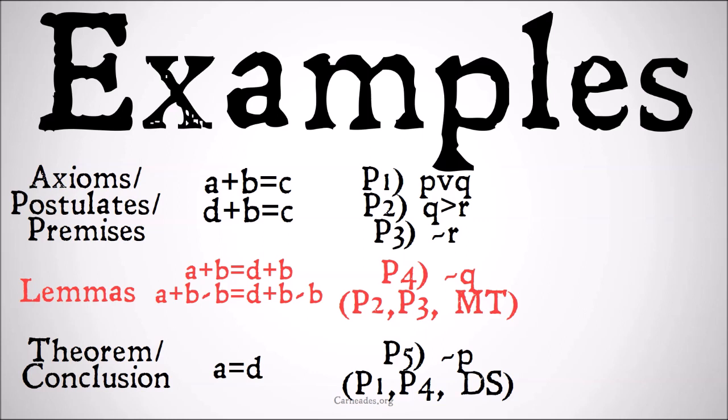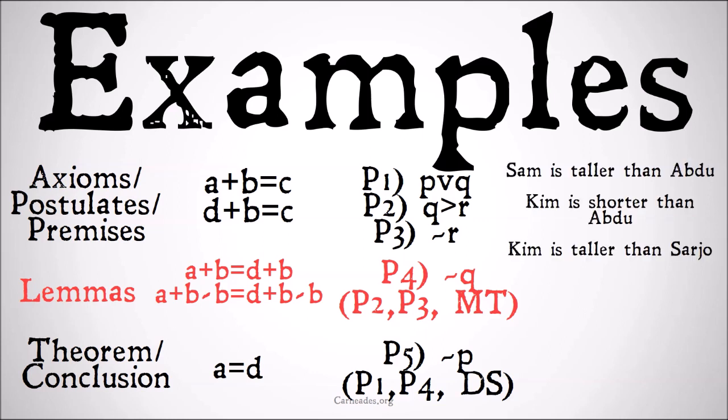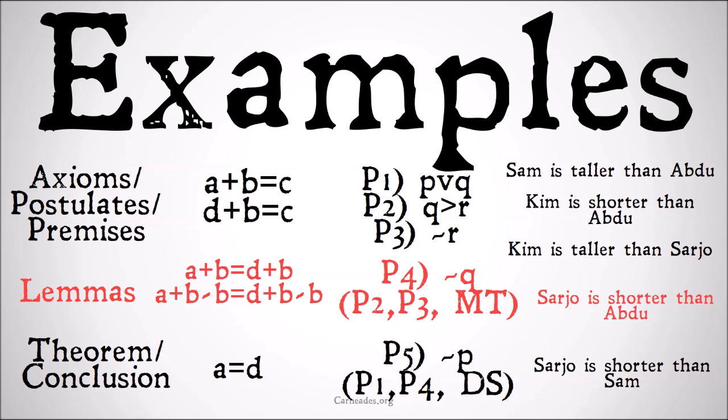We could also have an argument: Sam is taller than Abdu; Kim is shorter than Abdu; Kim is taller than Sarjo. We'd take a lemma — Sarjo is shorter than Abdu — to conclude our eventual conclusion of Sarjo is shorter than Sam. So once again, lemmas are the intermediate steps that are the 'showing your work' of logic.